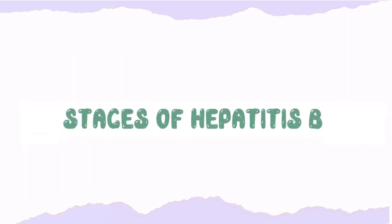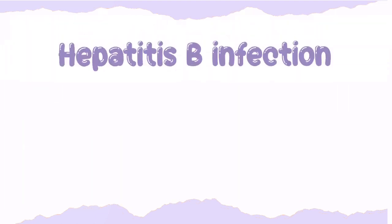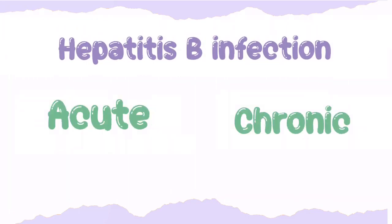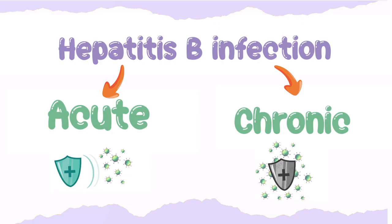Now let us move to the stages of hepatitis B virus. There are two stages: the acute stage and the chronic stage. The acute stage lasts for less than six months. The immune system here is capable of clearing the body of hepatitis B virus and complete recovery within a few months may be possible. However, many patients with acute hepatitis B develop chronic infection. Chronic hepatitis B infection lasts six months or longer. The immune system can't fight the infection. Chronic hepatitis B infection may last a lifetime.